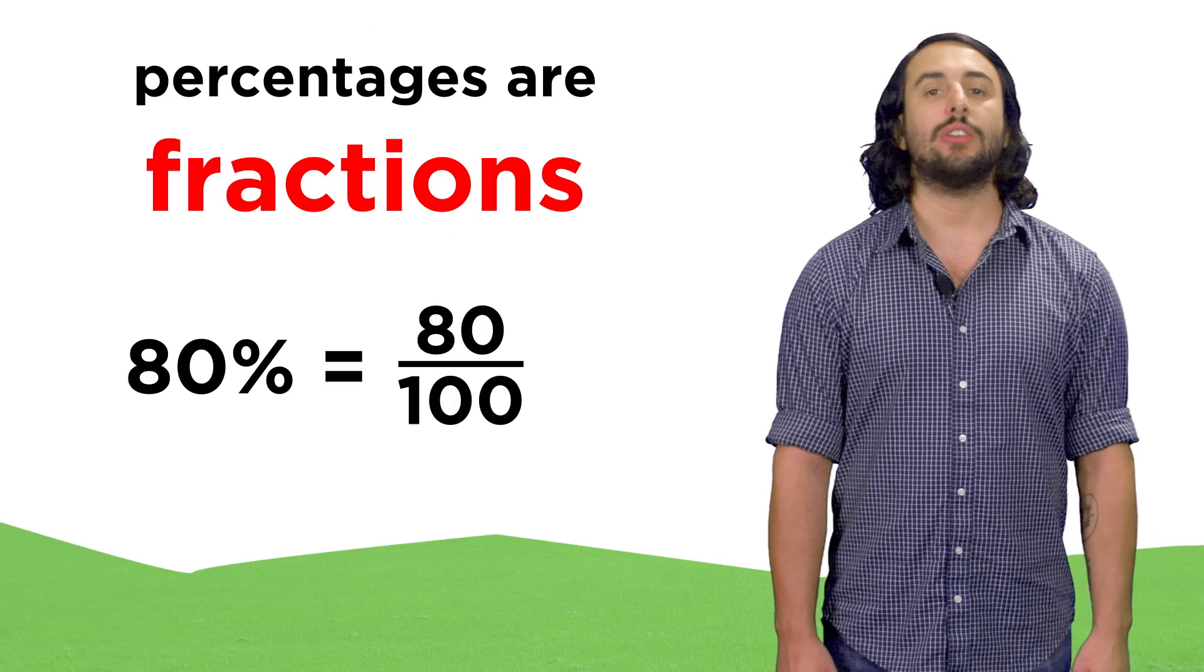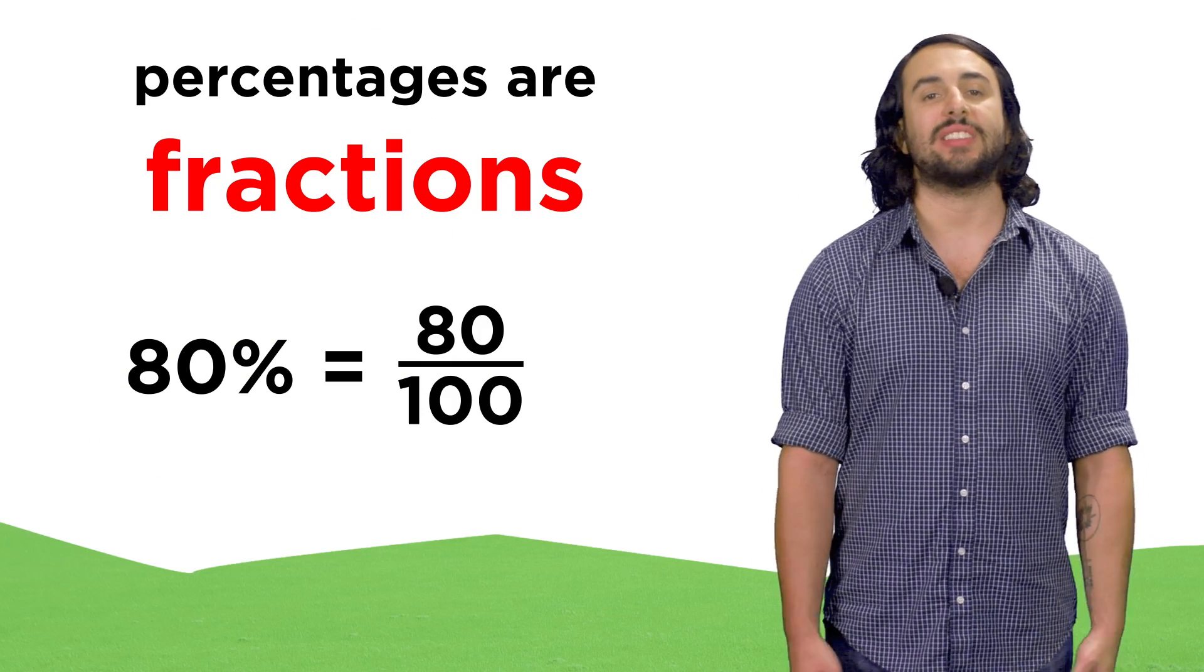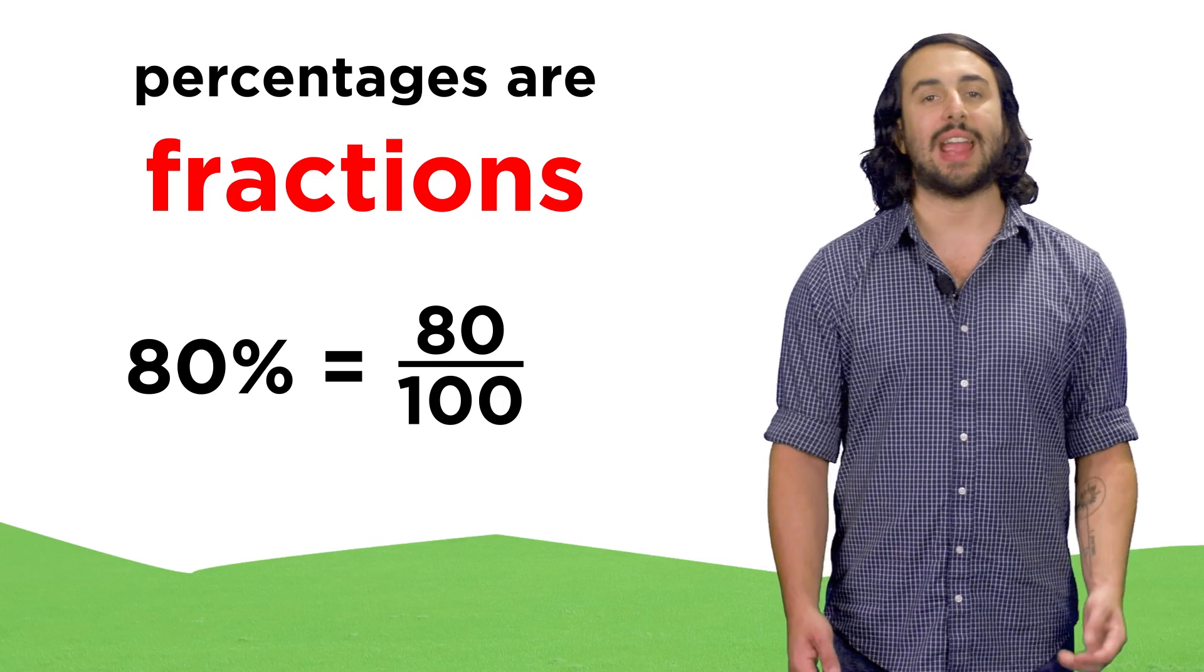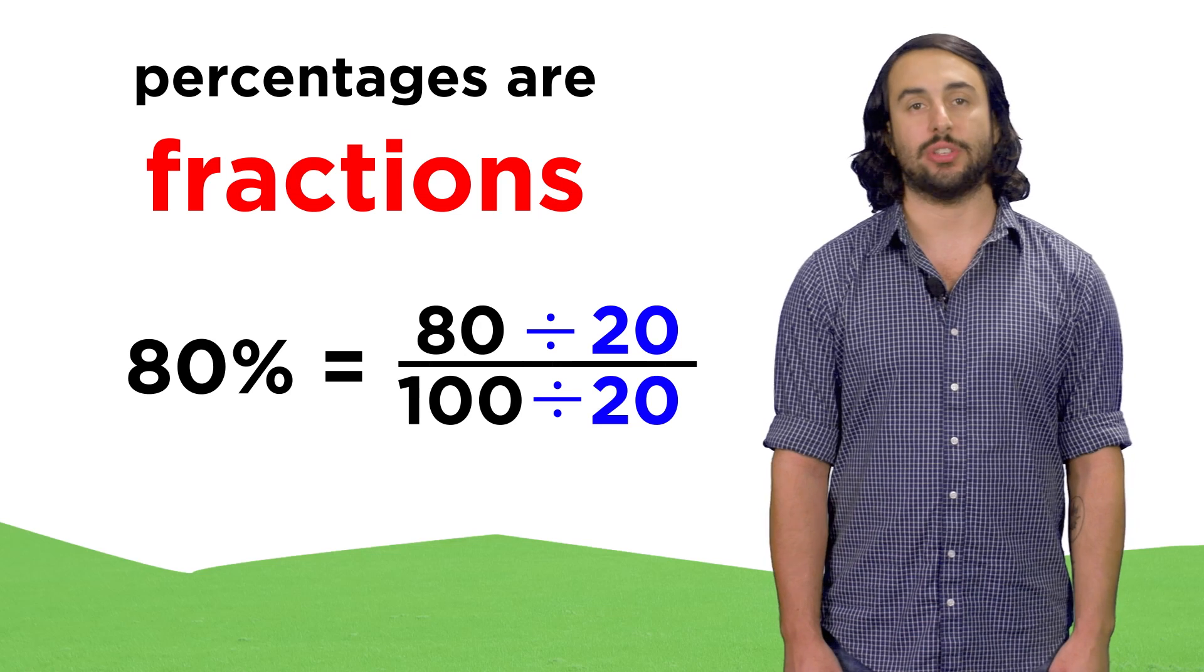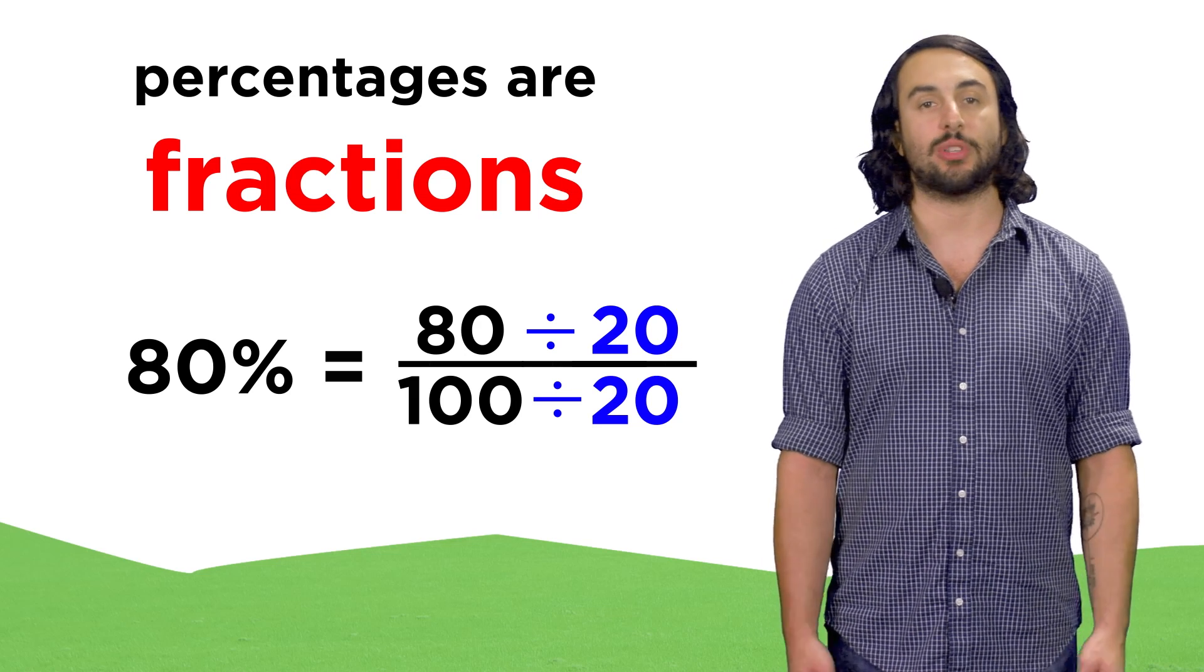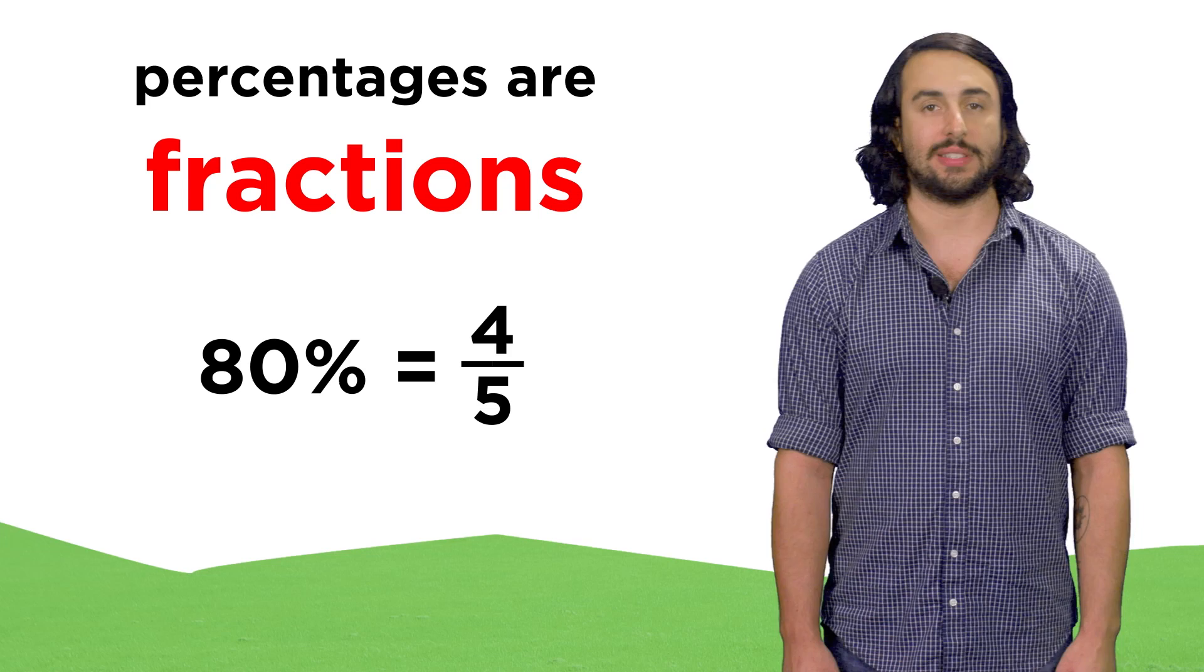In this way, we can look at percentages as simple fractions. Eighty percent is eighty one hundredths. We learned how to simplify fractions, so let's divide both of these numbers by twenty. We should get four fifths.